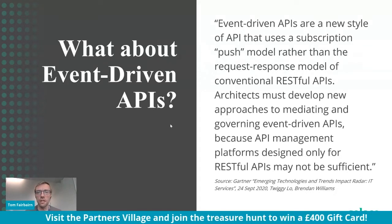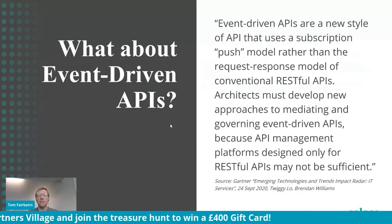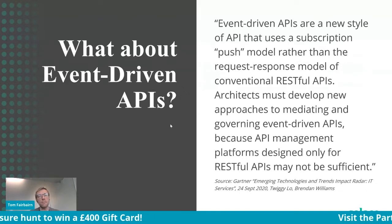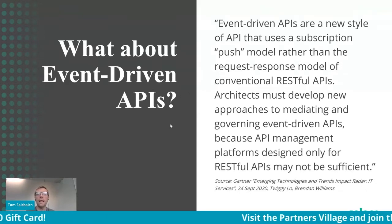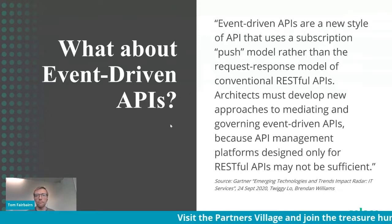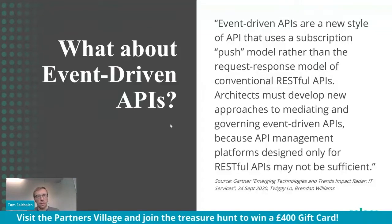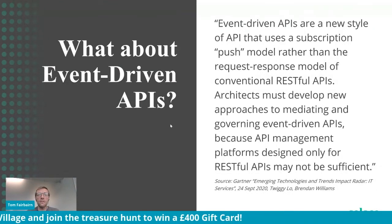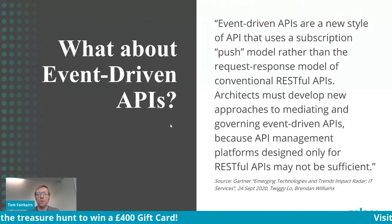It's a publish-subscribe model. As a consumer, rather than calling an API, I declare interest in certain events. An infrastructural layer — the event broker — accepts events from senders and pushes them out to all consumers. This isn't new: think of a stock exchange, where the latest prices are pushed to you over a market data feed. What we haven't had until now is a product view and developer portal view for these events.